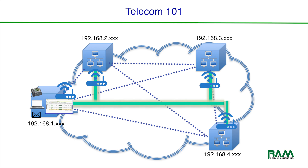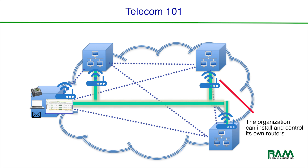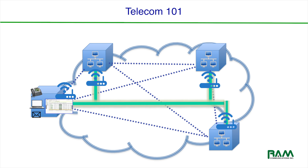In VPLS, every location and device looks like it is on the same local network using the same range of IP addresses. There are several benefits to this pseudo-LAN environment. For example, the end user has more control over the WAN elements — he or she can use their own routers to control Layer 3 traffic, so you're not depending on the carrier for those end routers. Second, because there's only one set of IP addresses to manage, troubleshooting, moves, adds, and changes are greatly simplified for the administrator of the network.